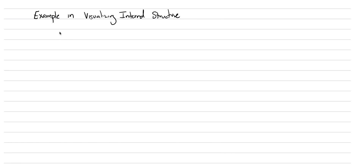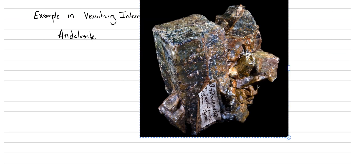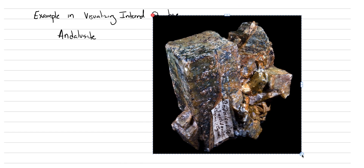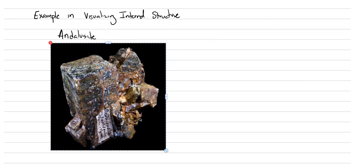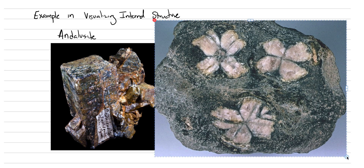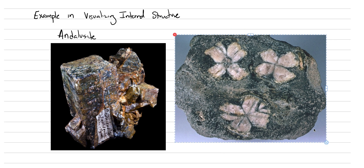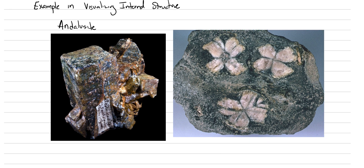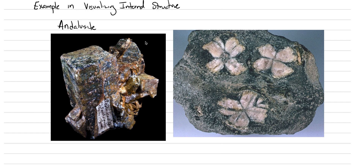Today's mineral that we're going to use as our demo is called andalusite. Andalusite is a really important metamorphic mineral. I'll throw in a couple images from Wikipedia showing andalusite. It's got some fairly characteristic properties — you could probably even guess what its crystal system and structure is by looking at the picture.